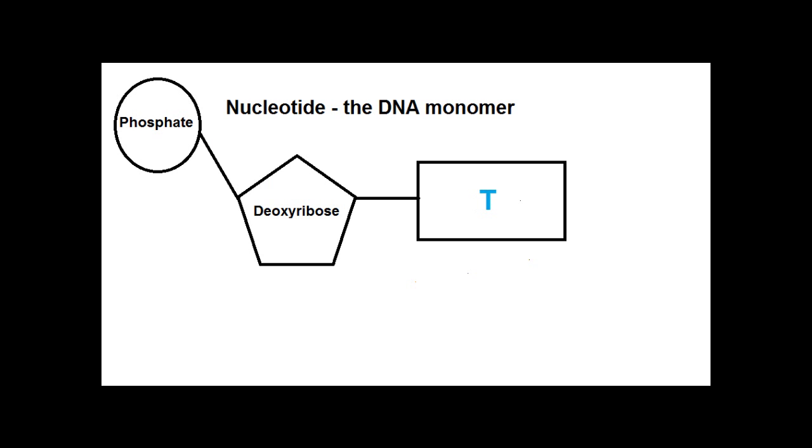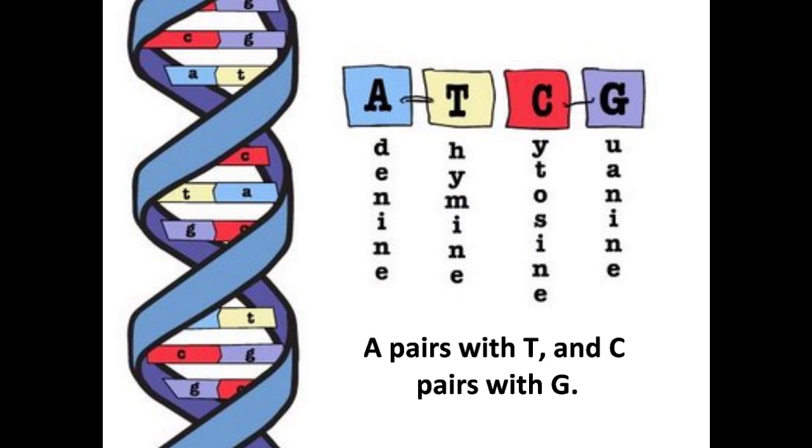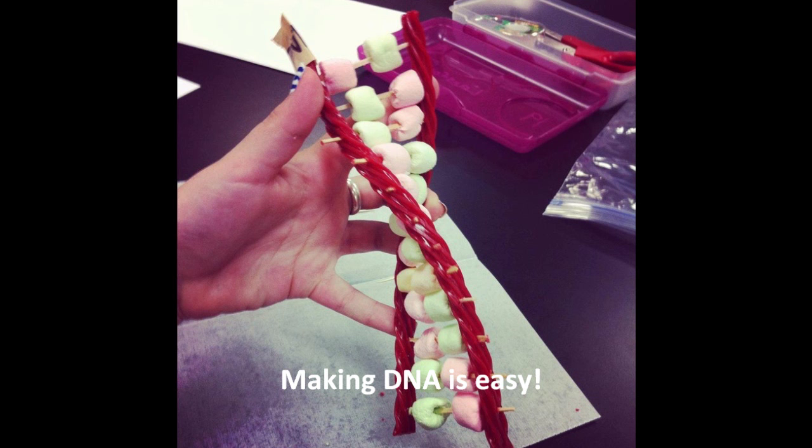You need a little bit of G-T-C-A. Just a little bit of G-T-C-A. A pairs with T and C pairs with G. Making DNA is easy.